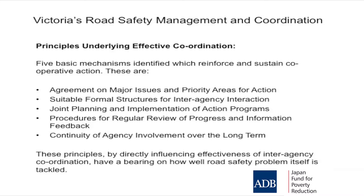Five basic mechanisms underlie effective coordination: first, agreement on the major issues and priority areas for action — that's the agenda for the decision-making structure, and the management group could put that to chief executives saying 'here are our recommended top five for the next 12 months.' Second, suitable structures for interagency interaction. Third, joint planning and implementation of action programs — chief executives should sign off on the action plan as a group, and then monitor it.